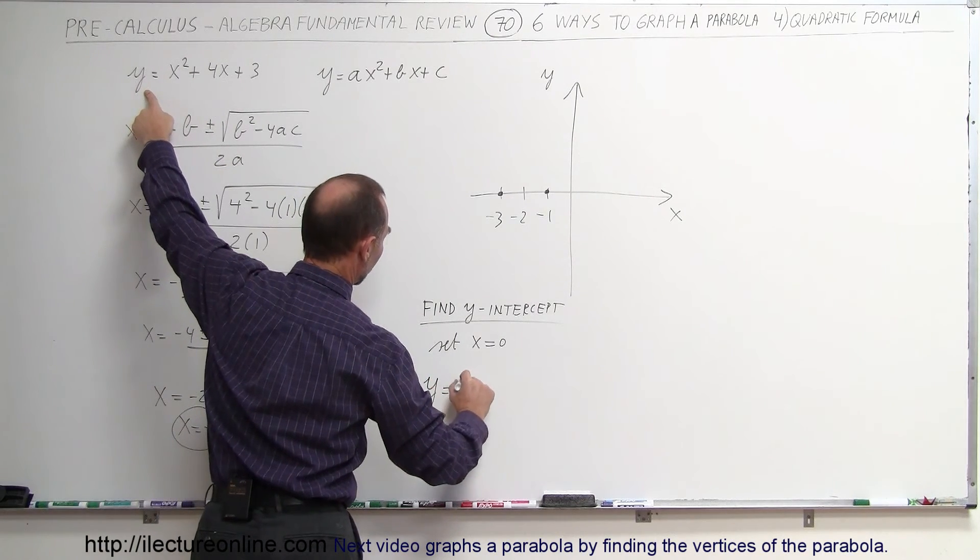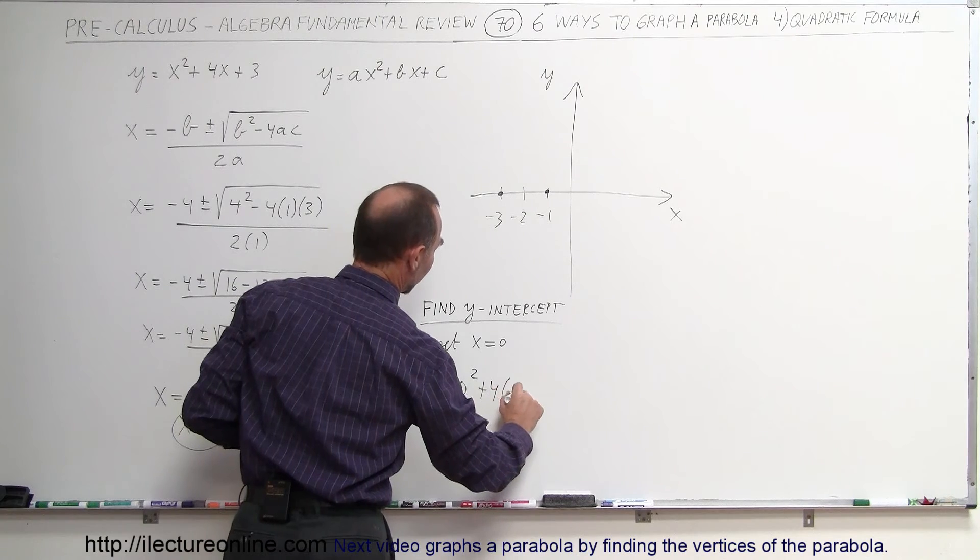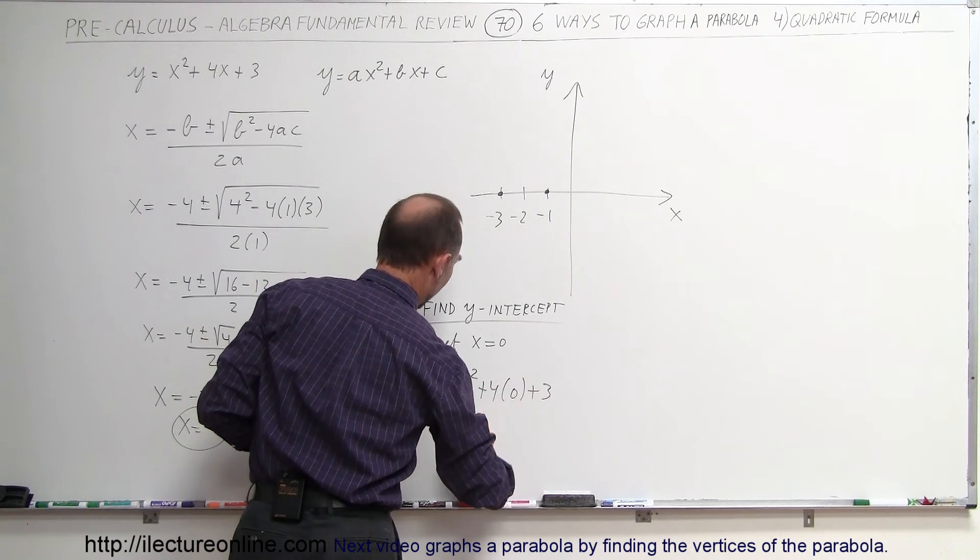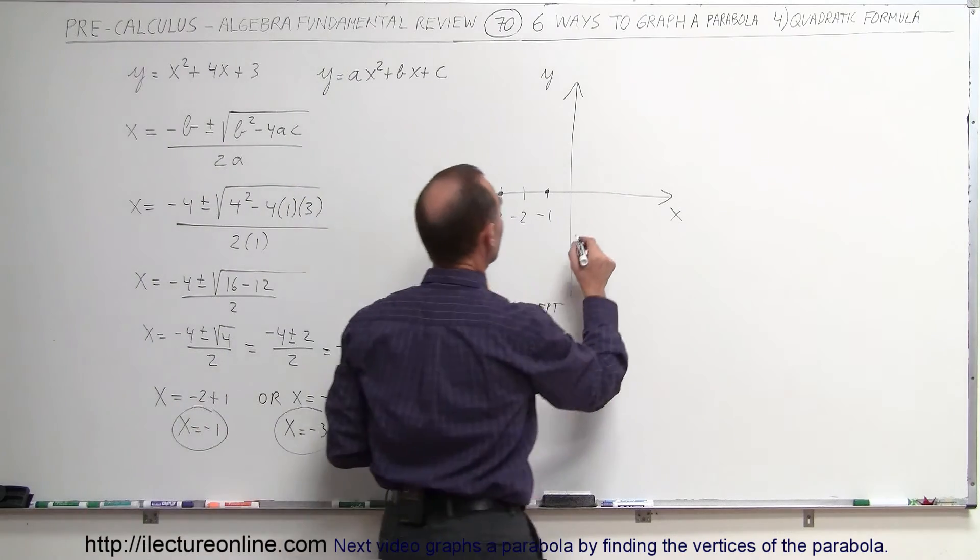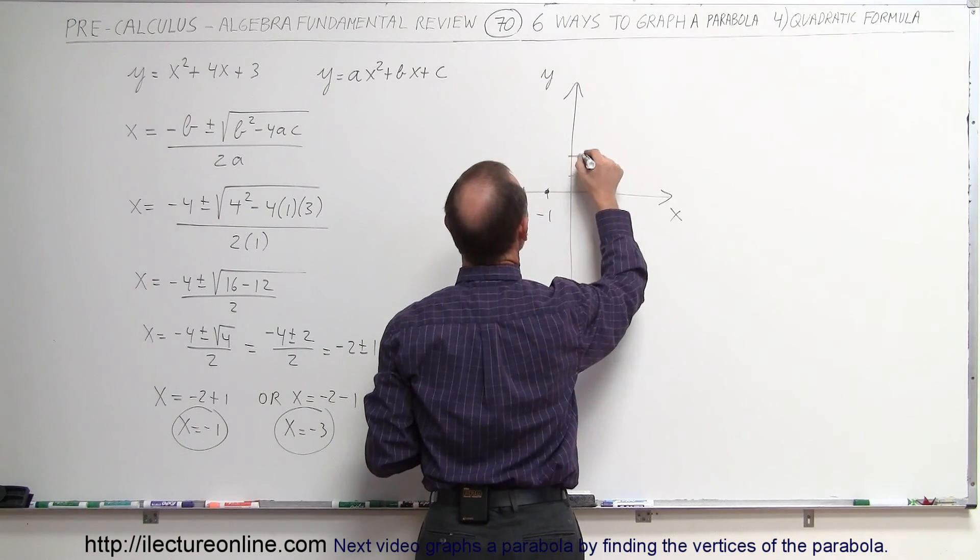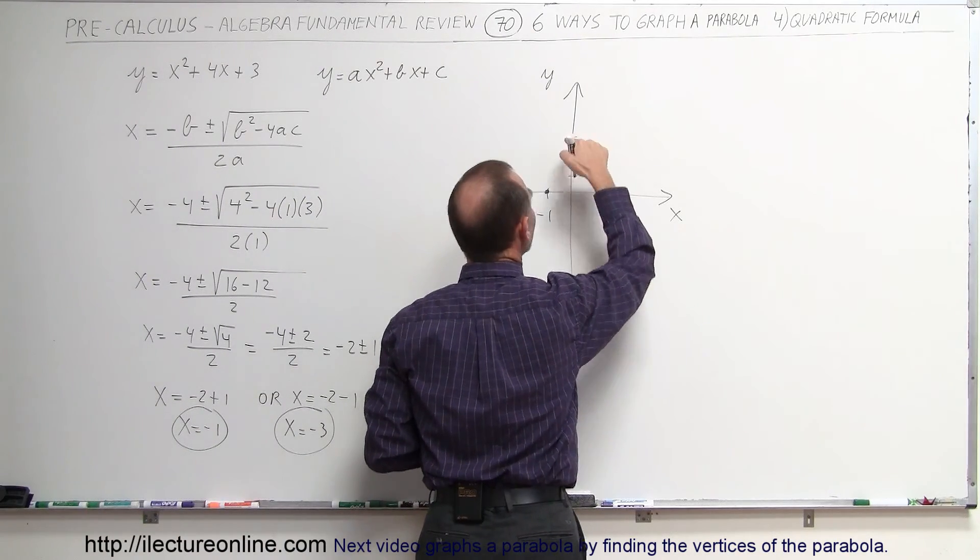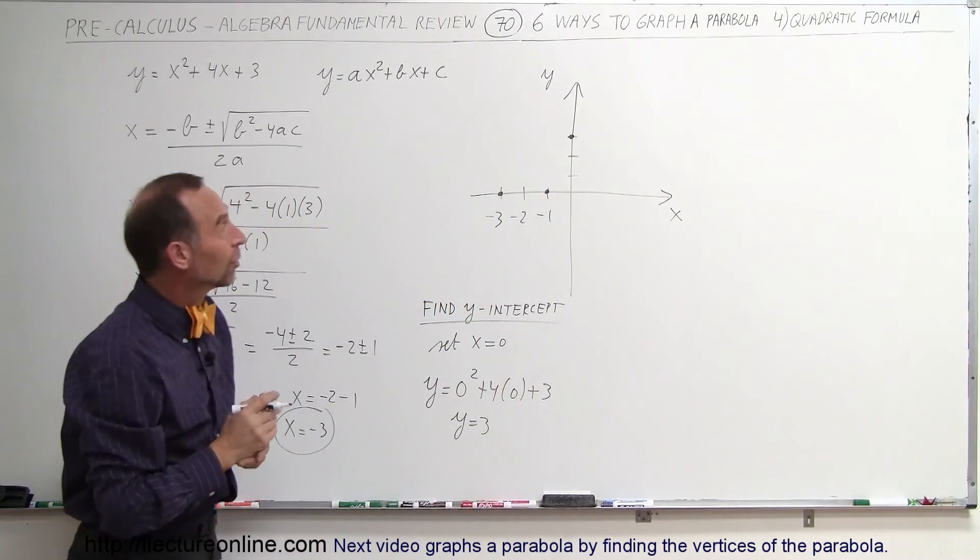So therefore, y is equal to 0 squared plus 4 times 0 plus 3, or y is equal to 3, which means when x equals 0, y is equal to 3. 0, 1, 2, 3. And we also know that the parabola crosses the y-axis there.